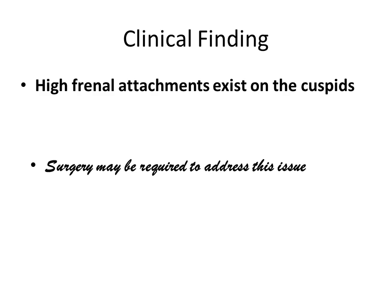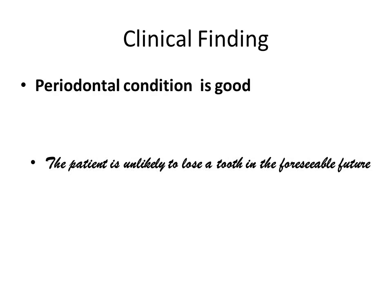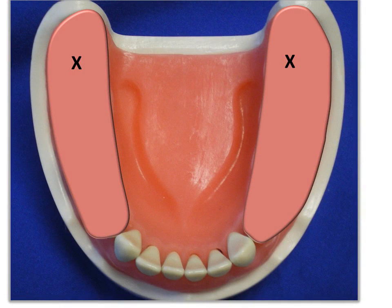The periodontal condition is good. There may be some attachment loss, but the abutments are in basically good shape — solid, with no mobility. We do not think the patient will lose a tooth in the near future, so we don't need to base our design strictly on anticipated tooth loss. Given those clinical findings, we'll proceed with the design.